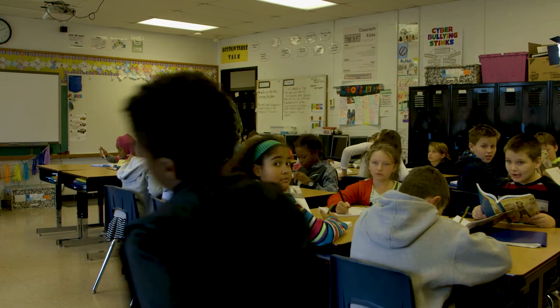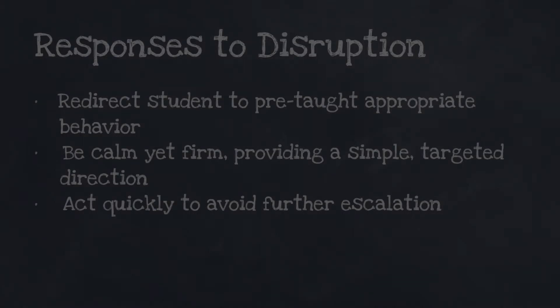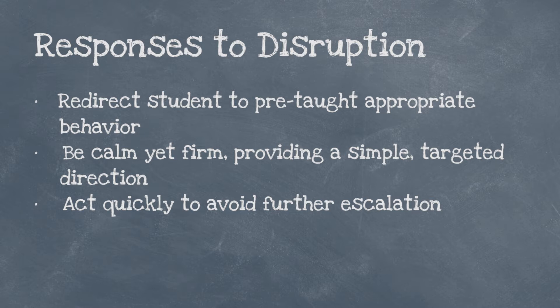Some students may continue or escalate disruptive behavior despite effective instruction and consistent consequences. The initial response to disruption must occur immediately upon noticing agitation — agitation is the last chance to stop behavior before it escalates to a peak. The first response should be one very specific direction for the student to engage in the alternative behavior that has been taught. This direction must be concrete, simple, and a step toward a larger, more appropriate behavior.